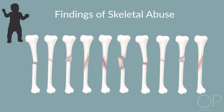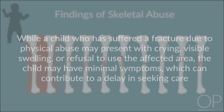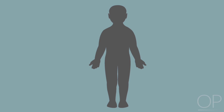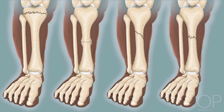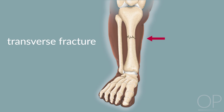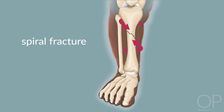In infants and toddlers, physical abuse is the cause of up to 20% of fractures. While a child who has suffered a fracture due to physical abuse may present with crying, visible swelling, or refusal to use the affected area, the child may have minimal symptoms, which can contribute to a delay in seeking care. The most common but least specific type of fracture found in child abuse cases is a long bone fracture. The configuration of the fracture can provide information about the mechanism needed to cause the break. For example, transverse fractures are due to a direct blow or bending force perpendicular to the bone. Buckle fractures occur from compression along the axis of the bone, and spiral fractures result from a twisting force.